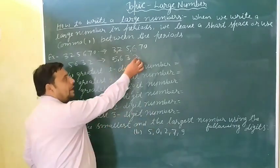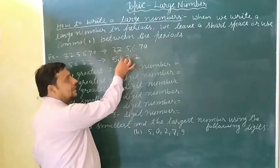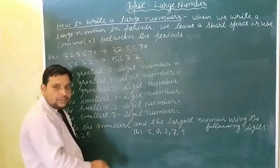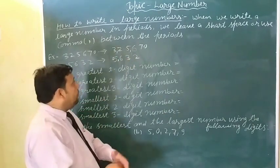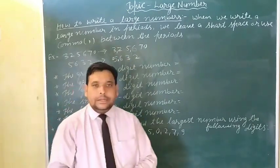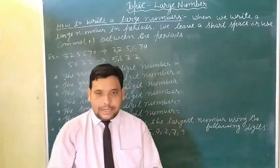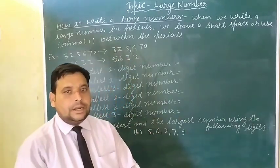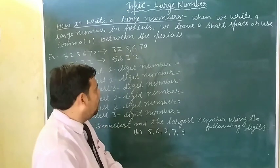Second example: one, ten, hundred, thousand — five thousand, six hundred, thirty-two.